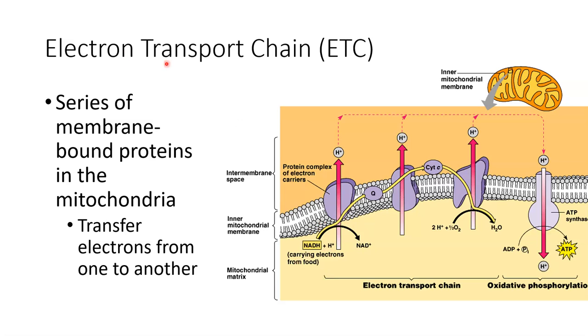Electron transport chain, we're transporting electrons along the way. And how do we get those electrons? From our molecules NADH and FADH2, which is not pictured here. All of this occurs in the inner membrane of the mitochondria.